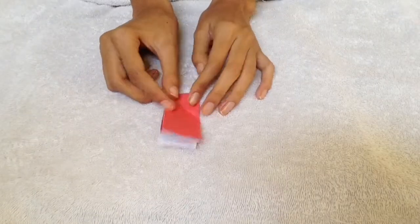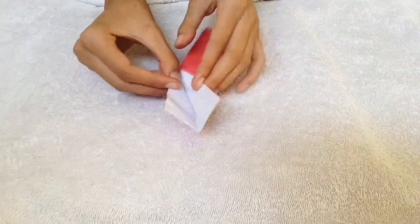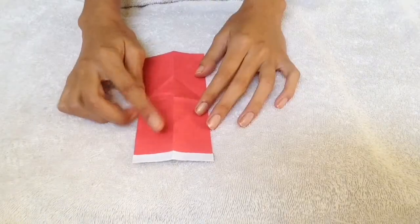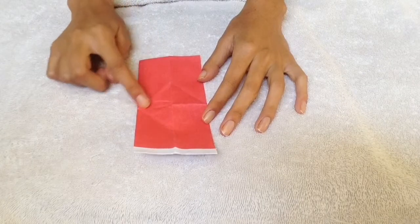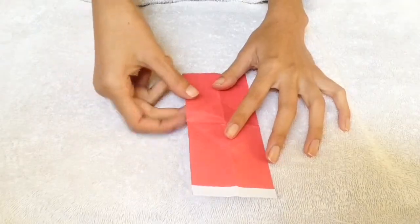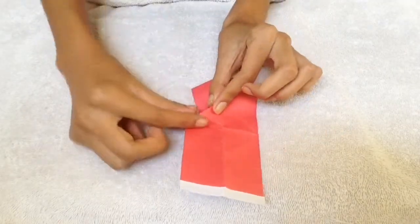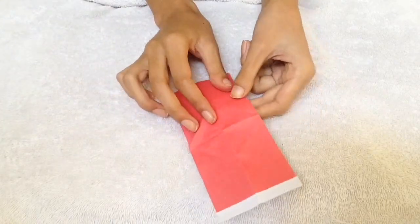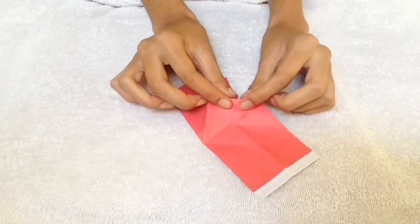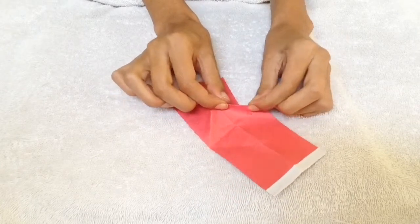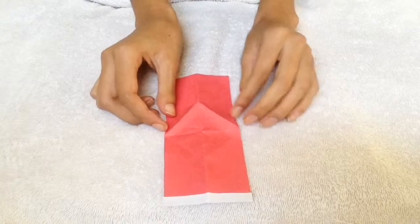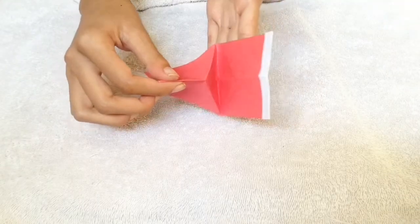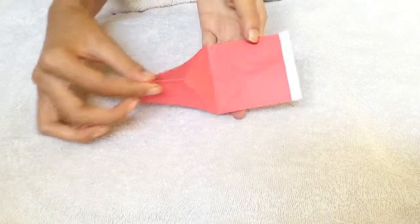Now undo all of those three folds so that you're left with this. Flip your paper over so that the red side is facing up. See the diamond shape? Now reinforce the bottom right crease of the diamond and invert the one on the left. Now fold the entire thing in half while pinching the bottom portion.